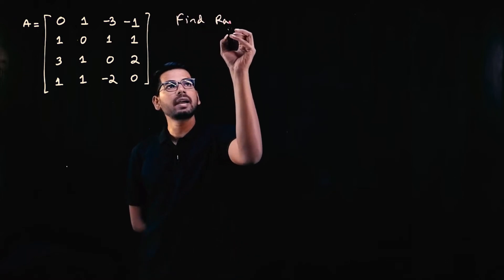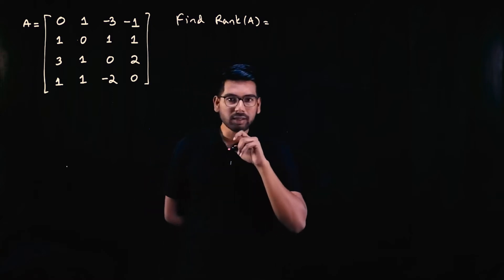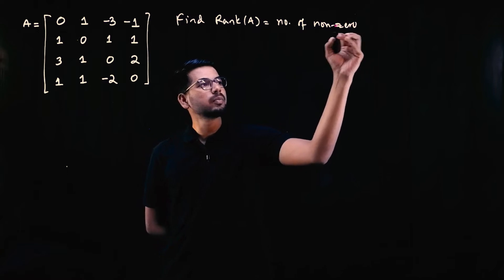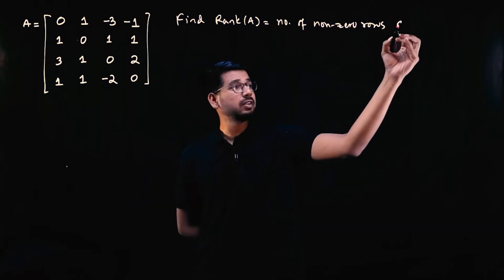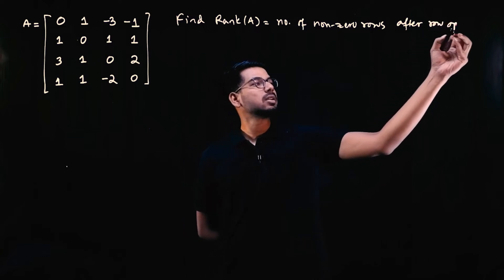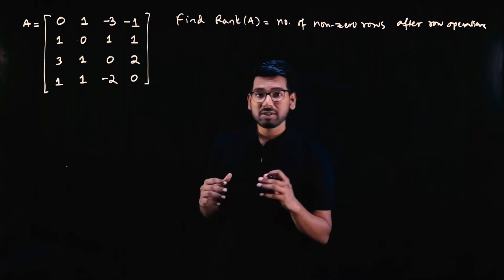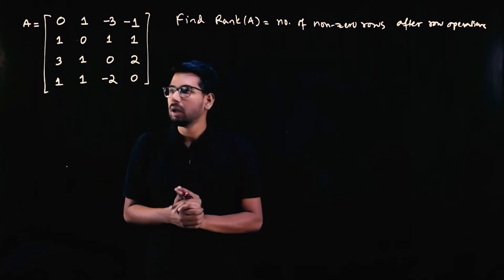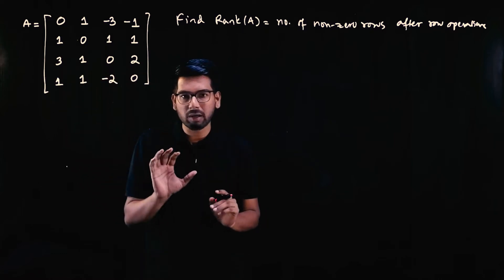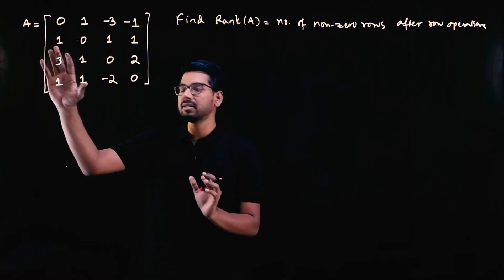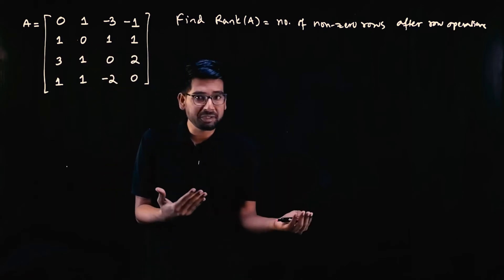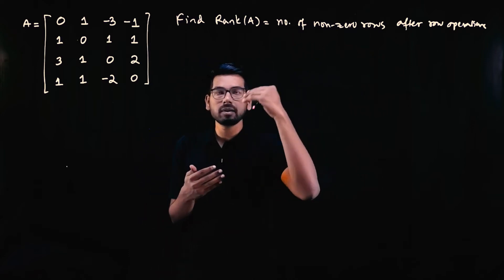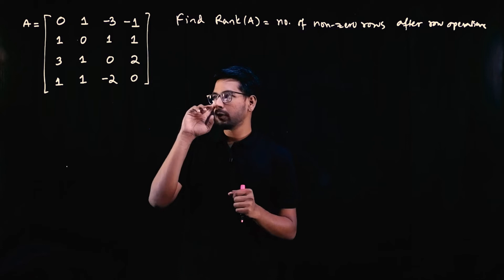We need to find the rank of matrix A. The rank of a matrix is the number of non-zero rows after we perform row operations. We do row operations to make as many elements of the given matrix zero as possible, and the remaining non-zero rows give us the rank.